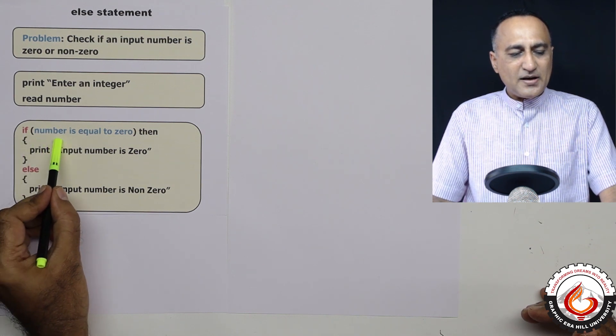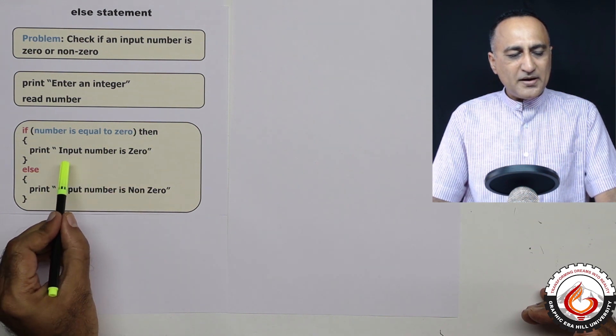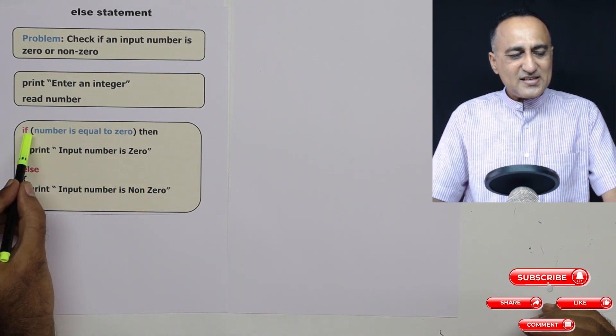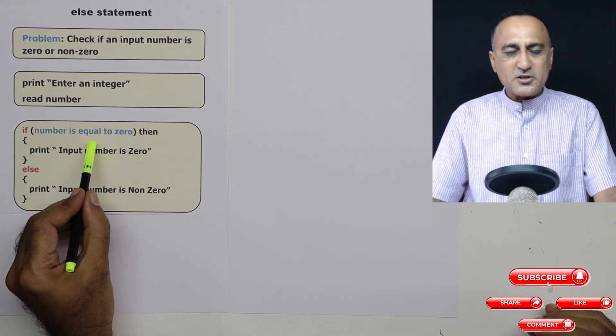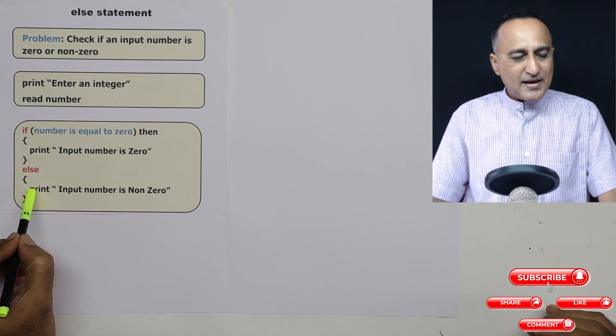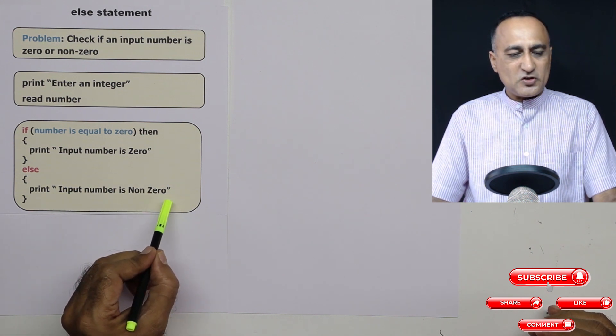If number is equal to zero, then I am going to print input number is zero. Suppose I had entered a number six, then the result of this Boolean expression would have been false. Then I will go to the else part. In the else part, I'm going to say input number is non-zero.